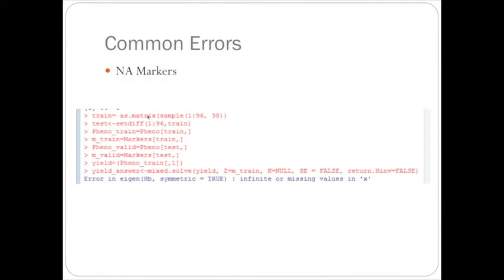And if there are any markers, if the imputation, if you didn't impute or set the NA markers equal to zero, there will be an error message that comes up saying that there's infinite or missing values in x, and x is your marker matrix. So you can go back and see where these missing markers are and whether to impute or just remove the marker.